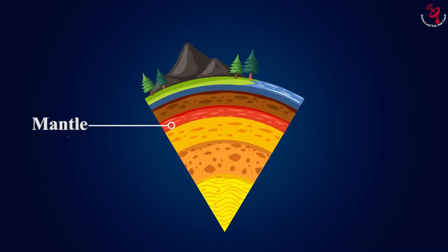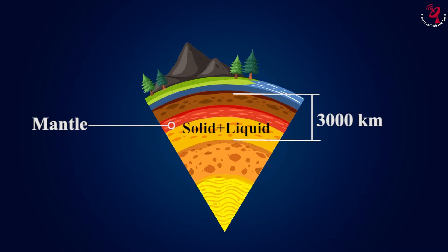Mantle. This layer starts below the crust layer, and is denser than the crust. It is 3,000 kilometers in thickness. It is mostly made of silicate rocks rich in magnesium and iron. This layer is not made of full solid. Somewhere, the rock is completely melted, which is called magma. In this layer, rocks are moving constantly.